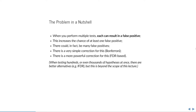There is a very simple correction for this, which is called the Bonferroni correction, which I will discuss first. Then I will discuss a more powerful correction based on the false discovery rate. When you are dealing with a very large number of hypothesis tests, like hundreds or even thousands, there are better alternatives like the local false discovery rate, but this is beyond the scope of this lecture.